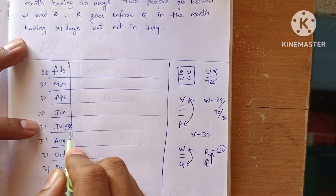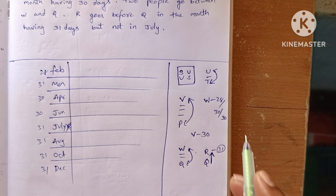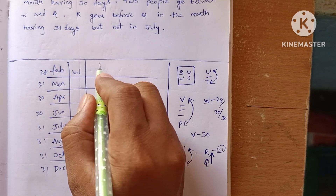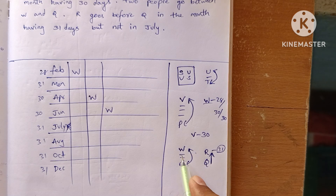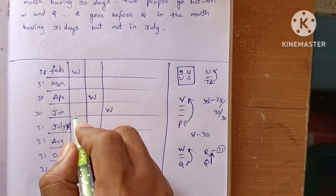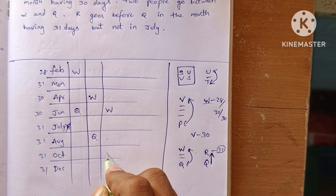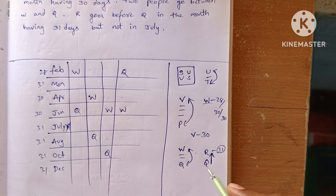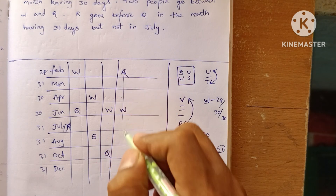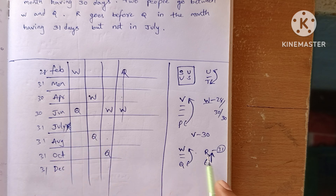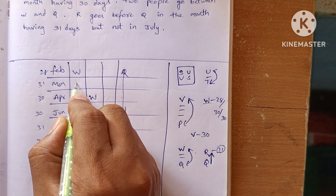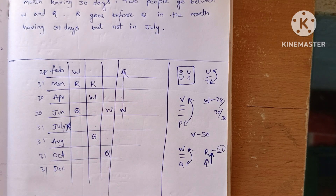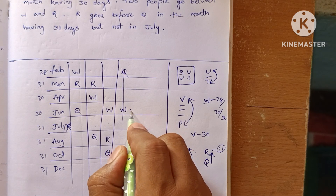Let's start solving. W will be placed in either February, April, or June. With two people between W and Q, we identify possible positions for Q. R must be above Q with 31 days but not July, so R's valid positions are identified by eliminating July.